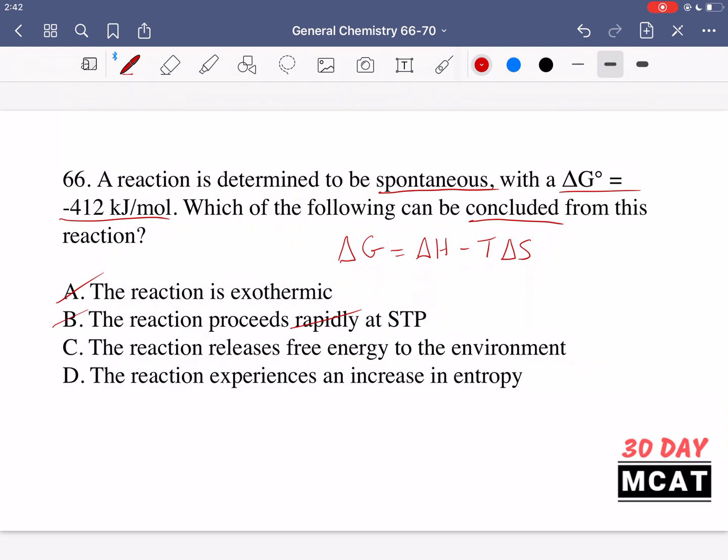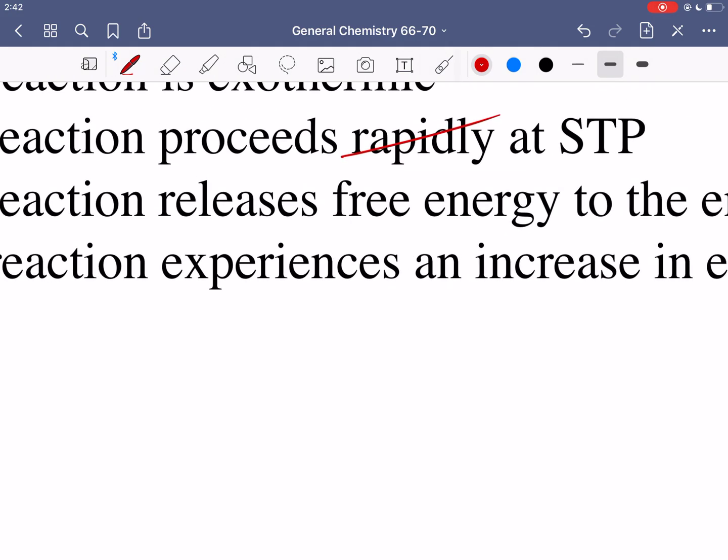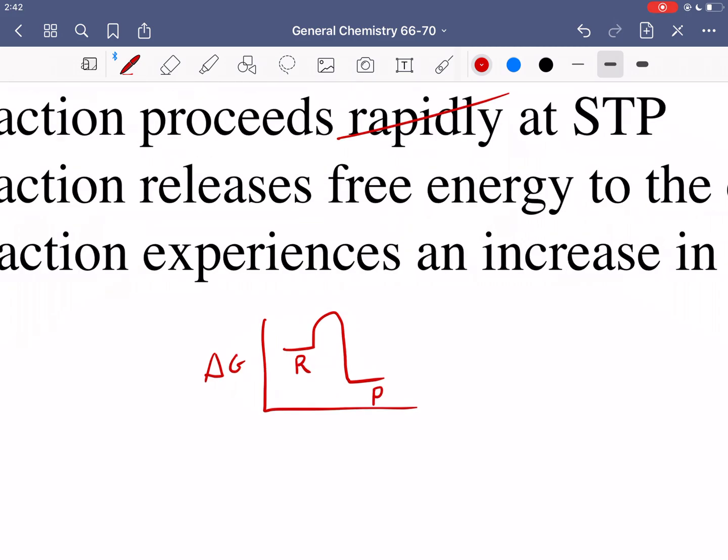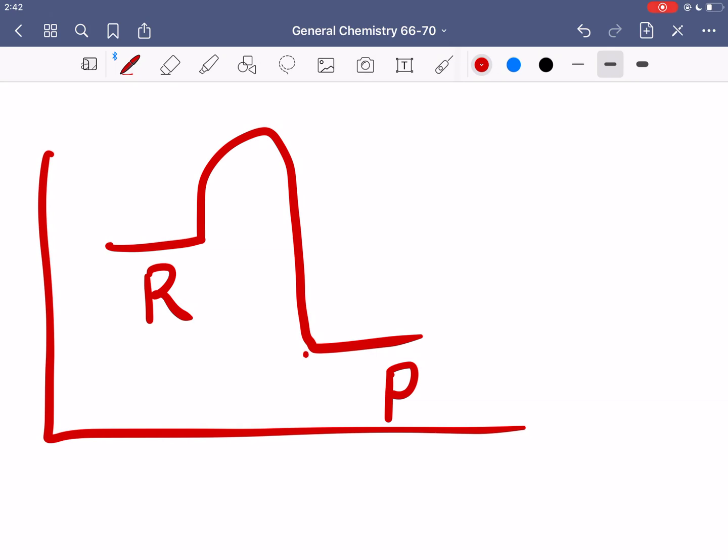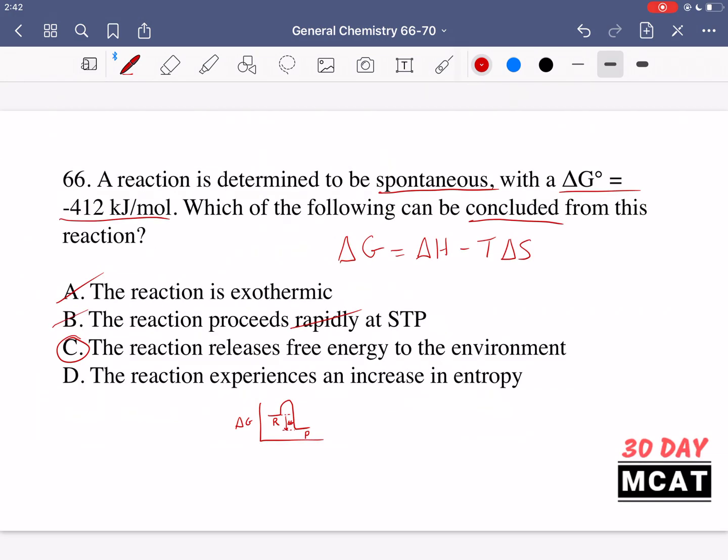Option C is saying the reaction releases free energy to the environment. This is correct. So if we had some type of diagram and we have delta G being our free energy, and then we have reactants to products. Because we are going down this much, this delta G difference is how much energy is released. So on the y-axis we have free energy, and there's a difference in free energy between the reactants and products. The products are at a lower free energy.